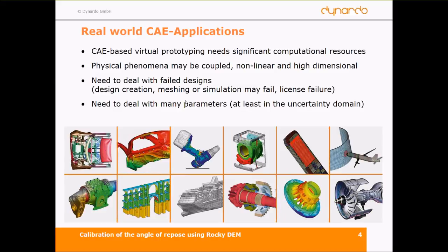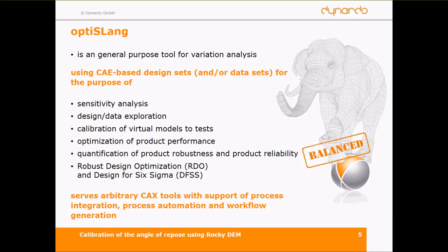Life is hard, and that is something OptiSLang has to keep in mind. OptiSLang is a general-purpose tool for variation analysis, which includes sensitivity analysis, design and data exploration, calibration of virtual models to test, and robust design optimization and design for Six Sigma.